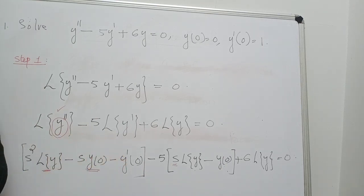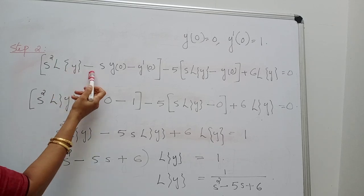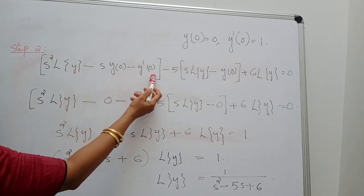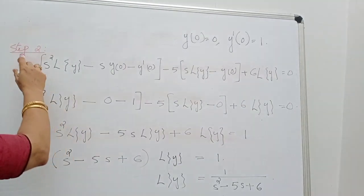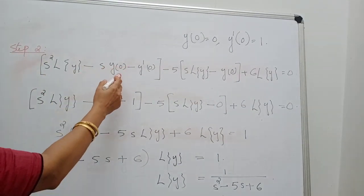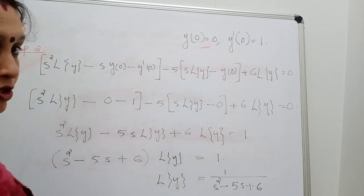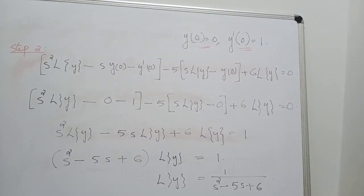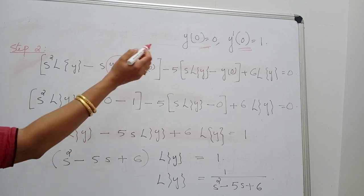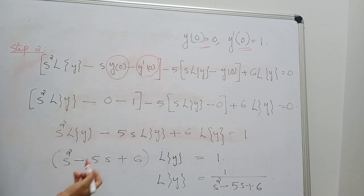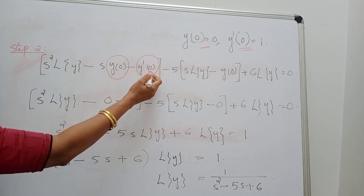Now moving on to step 2. By step 1, we have s²·L{y} − s·y(0) − y'(0) − 5·[s·L{y} − y(0)] + 6·L{y} = 0. In step 2, apply the initial conditions. The given conditions are y(0) = 0 and y'(0) = 1. So everywhere, replace y(0) with 0 and y'(0) with 1.